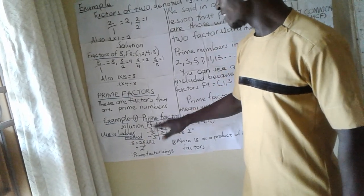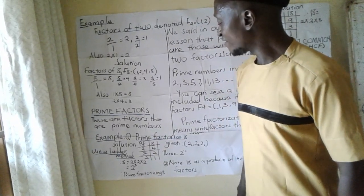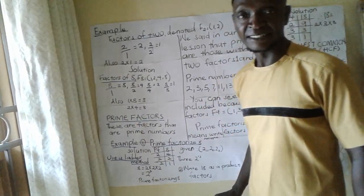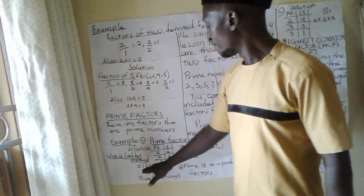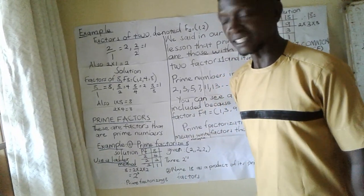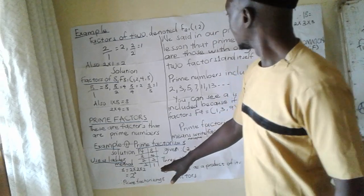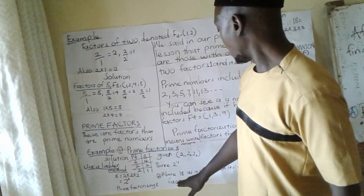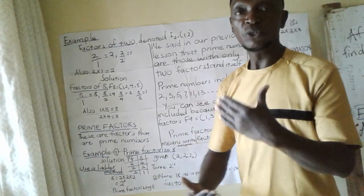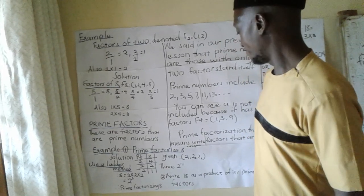That means we get the factors of 8. We start by 2 because it is the first prime number. We divide: 8 divided by 2 is 4, 4 divided by 2 is 2, and 2 divided by 2 is 1. This is called the ladder method. Which means if you write 8 as the product of its prime factors, it will be 2 times 2 times 2, or you can say 2 to the power of 3. So there are three 2s in 8.